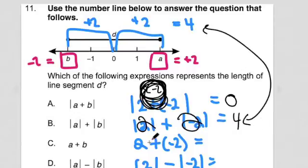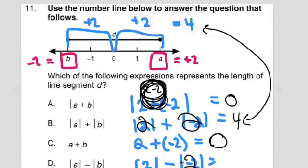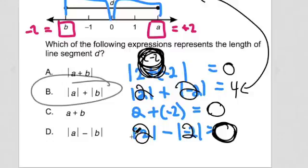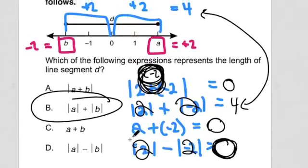What about the other choices? 2 plus negative 2 — you're adding negative 2 to 2, that's just 0. The absolute value of negative 2 is 2, but then you're subtracting that from 2, so you're getting 0. The answer is B — in this case, B is going to get you to the value of D.